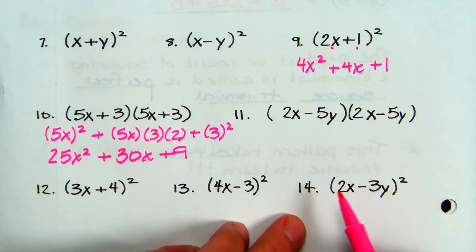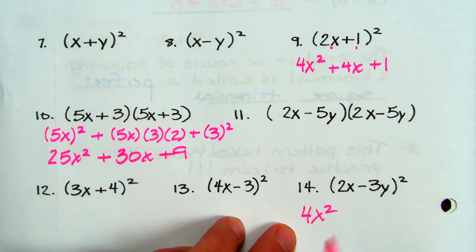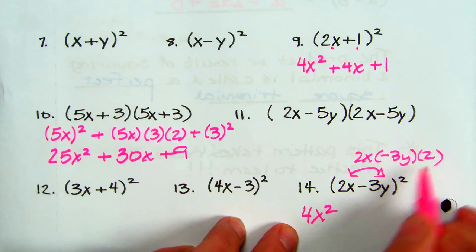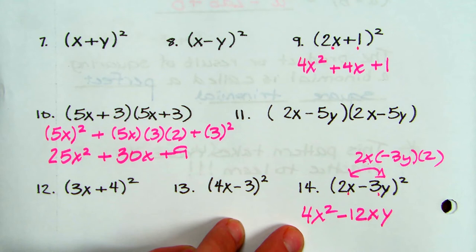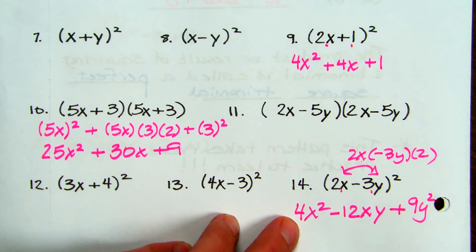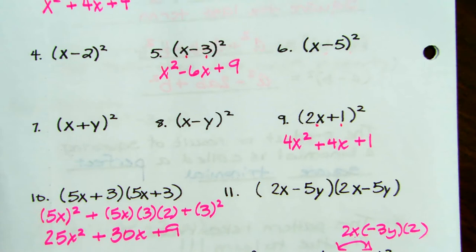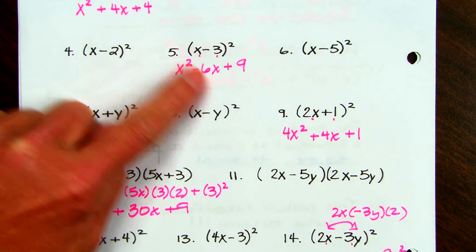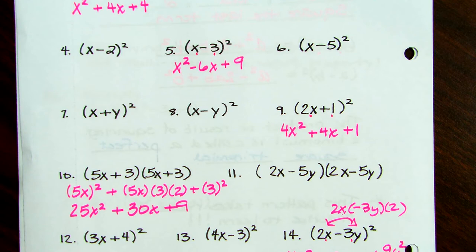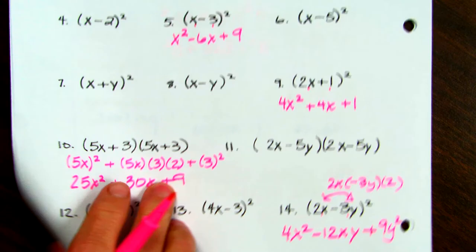Let's look at number 14: 2X minus 3Y squared. Square the first term: 2X squared is 4X squared. First times last times 2: 2X times negative 3Y times 2 — so 2 times negative 3 is negative 6, times 2 is negative 12, giving negative 12XY. Square the last term: 3 squared is 9, then Y squared, giving 9Y squared. Notice all these multiplied problems are trinomials that start and stop with a perfect square, and their last term is always positive.